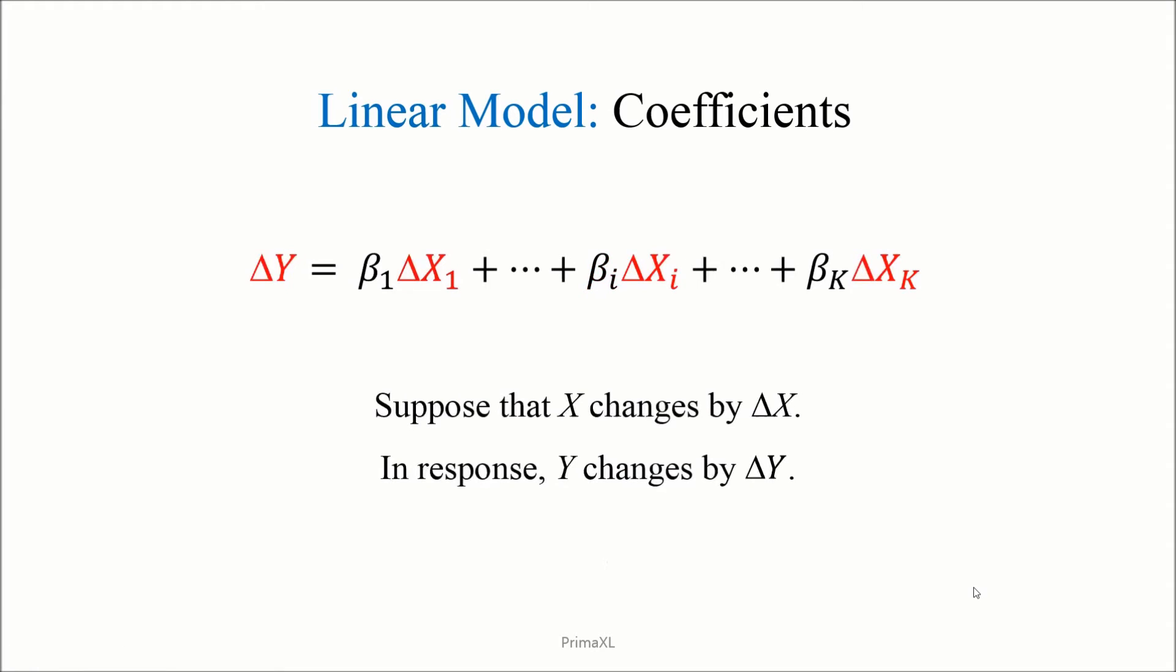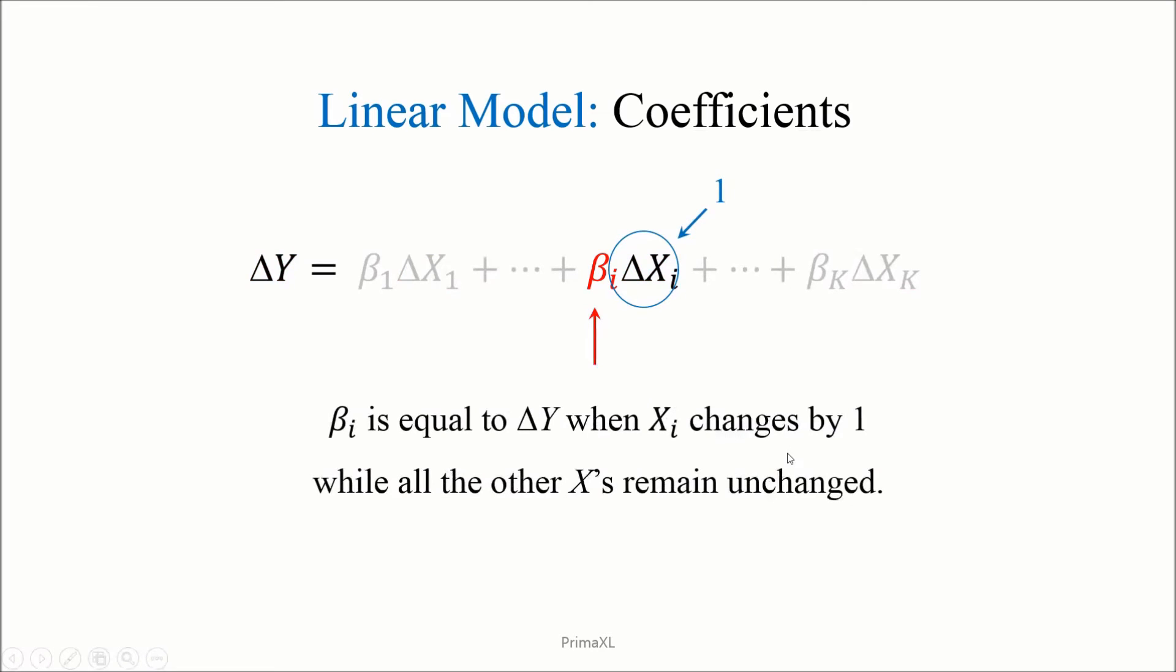The meaning of the beta coefficients can be interpreted in the following way. Suppose that the values of the x variables change by delta x. This change in x will be reflected as a change in y, which is denoted as delta y. Now, imagine the situation where only one of the x variables increases by 1 while all the rest remains the same. All the delta x terms are 0 except for this one, which has value equal to 1. Then, we can interpret that beta i is precisely equal to the change in y.